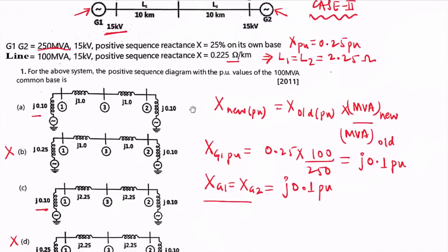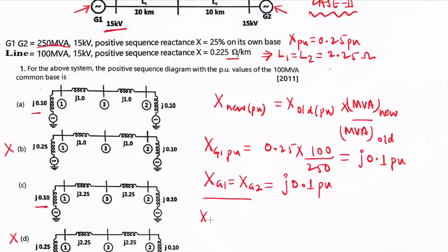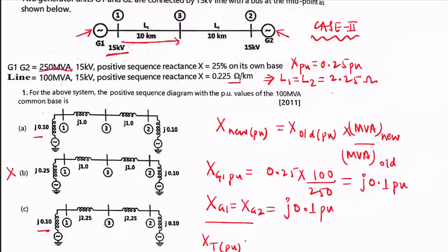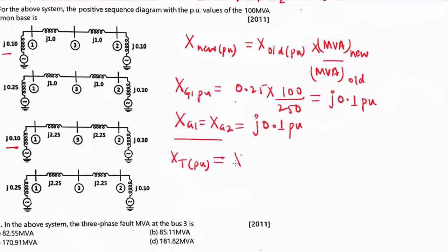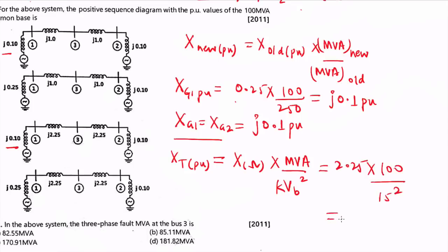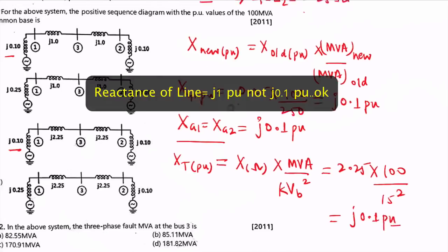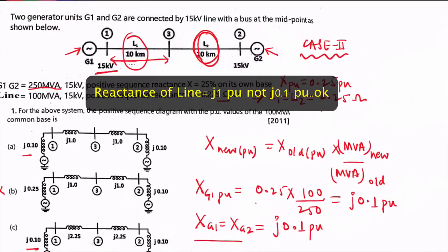Now we need the transmission line reactance in per unit. Taking the 10 km line: its ohmic value is 2.25 ohms. The formula is: X (pu) = X (ohm) × MVA / (V_base kV)². So X_line = 2.25 × 100 / (15)² = j0.1 pu. Therefore, line L1 = j0.1 pu and line L2 = j0.1 pu as well.